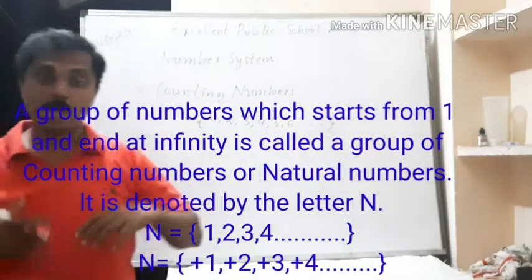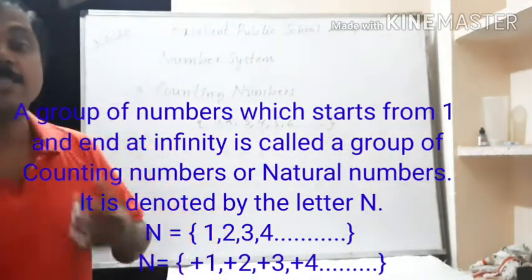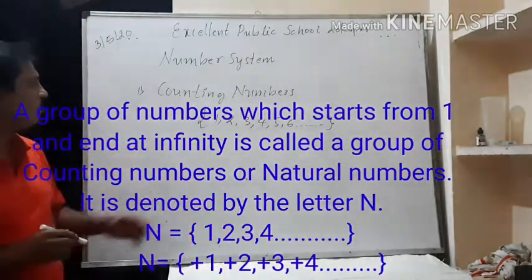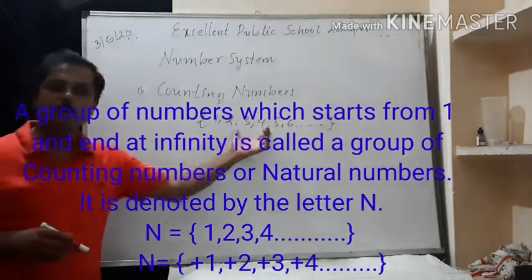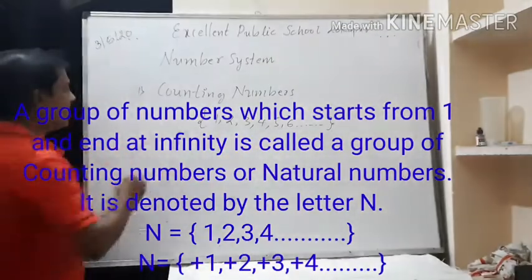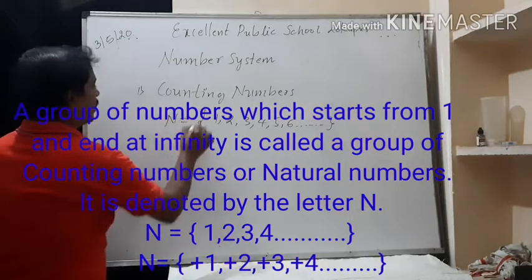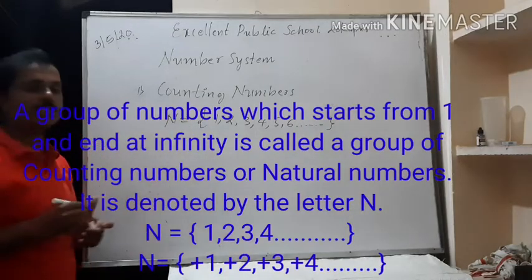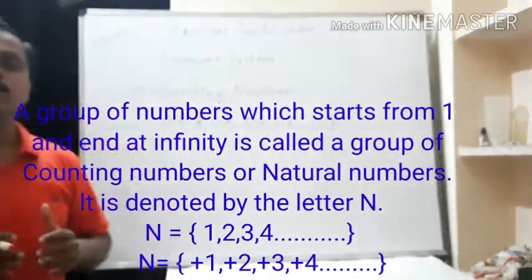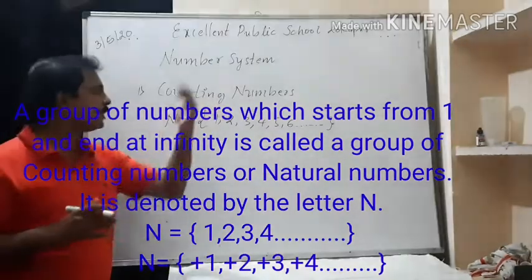Counting numbers are also called natural numbers. Therefore, this group of numbers is denoted by the letter N. N stands for natural numbers, or the group of counting numbers.